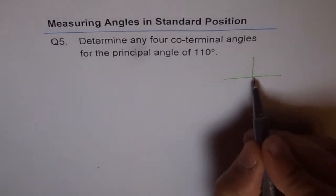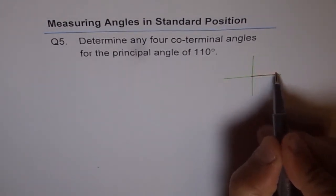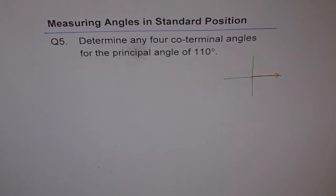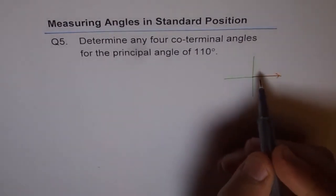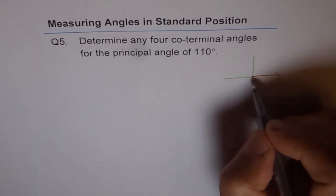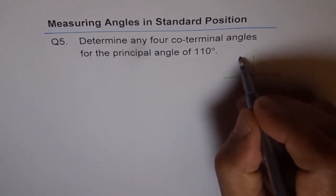If it is an angle of 110 degrees, this is our initial arm and the terminal arm should be in quadrant 2, because this is 90 degrees and it's more than 90 degrees. So let's make this as 110 degrees.